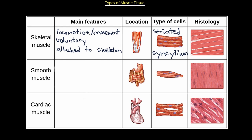The next type is smooth muscle, shown here with our digestive tract. Smooth muscle exists all over the digestive tract — pretty much the entire lining of the digestive tract is smooth muscle tissue. It performs something called peristalsis, which pushes food down in the same direction and prevents it from coming back up. Smooth muscles also exist on blood vessels like arterioles, which can constrict or dilate depending on blood pressure.